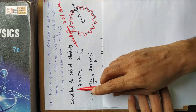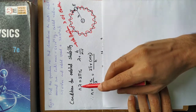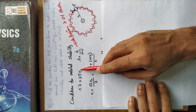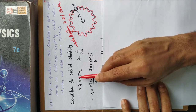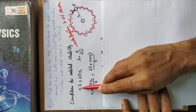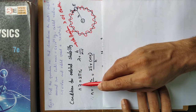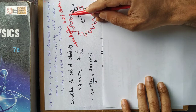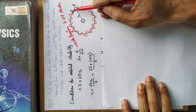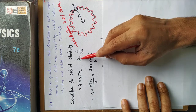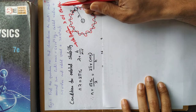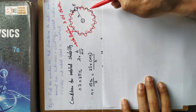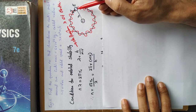We apply quantum physics to the solar system. The condition for orbital stability is n·λ = 2πr_n: the circumference of the orbit should be an integral multiple of the de Broglie wavelength. The de Broglie wavelength is λ = h/(mv). So quantum physics demands that Earth's de Broglie wavelength fits an integral number of times into the orbital circumference.